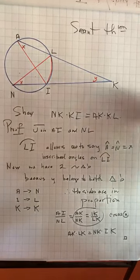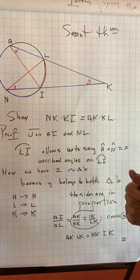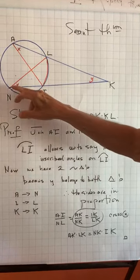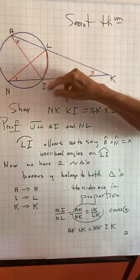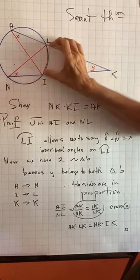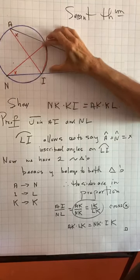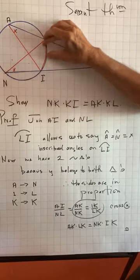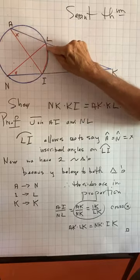We're going to show this. We're going to join two chords NL and AI, and then this arc in here gives me an inscribed angle and an inscribed angle. Inscribed angles on the same arc are equal.